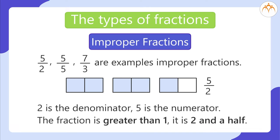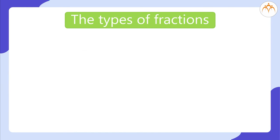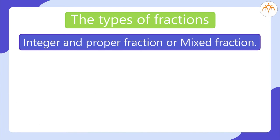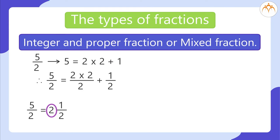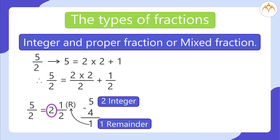Improper fractions can be converted into an integer and a proper fraction, forming a mixed fraction. For example, 5 divided by 2 equals 2 and 1 half: divide 2 into 5, the integer is 2, subtract 4, and the remainder is 1.